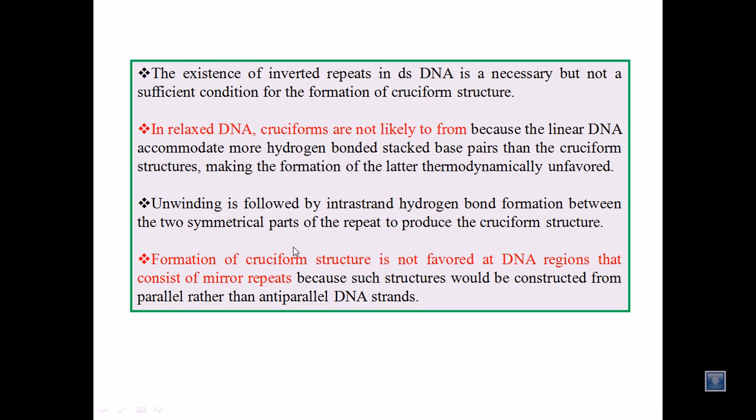So we cannot find this cruciform at the direct mirror repeats, because such structures would be constructed from parallel rather than anti-parallel DNA strands. And we need this kind of mirror repeats on the anti-parallel strands, that means we need the palindromic sequence for making this cruciform. If we are having only mirror regions or mirror sequences of nucleotides, then it is not the probable way that they will interact and form this kind of cruciform DNA.